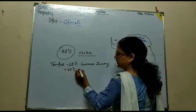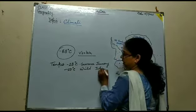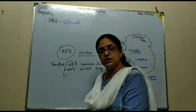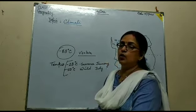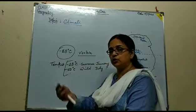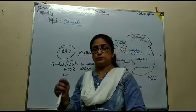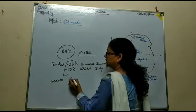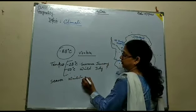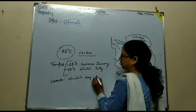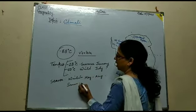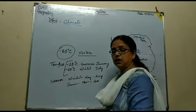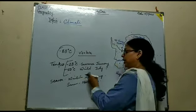During winter, in the month of July, the temperature is about minus 50 degrees centigrade. As you have already read about the revolution of the Earth, when there is summer in the northern hemisphere there is winter in the southern hemisphere, and vice versa. The winter season is from May to August, whereas summer is from November to February. The summers are shorter whereas the winters are longer and colder.